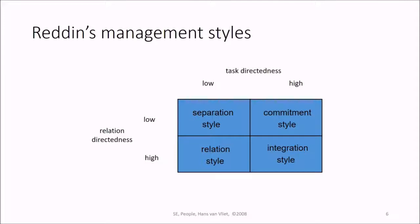This is Redding's management style. If you see here, there are two parts: relationship directedness and task directedness, low to high. So separation style, commitment style, relational style, and integration style - separation, commitment, relation, and integration with respect to the task and their relationship.